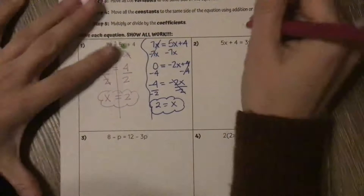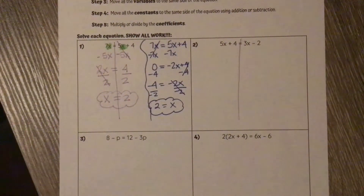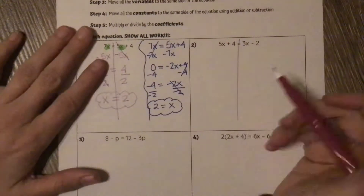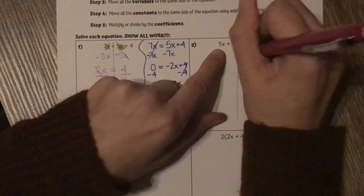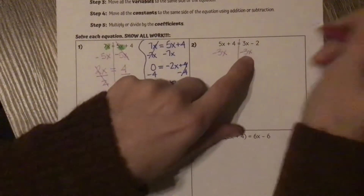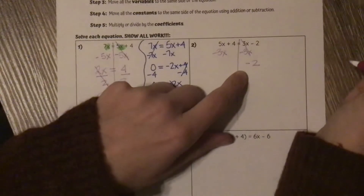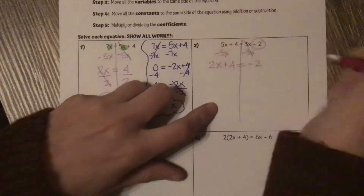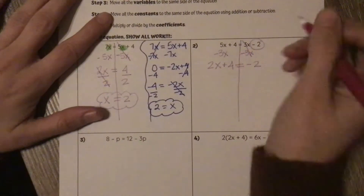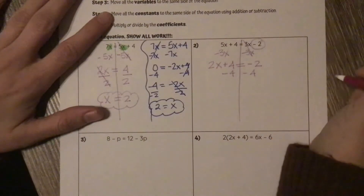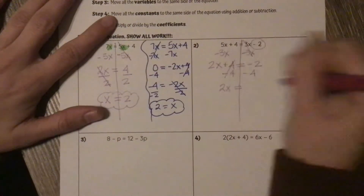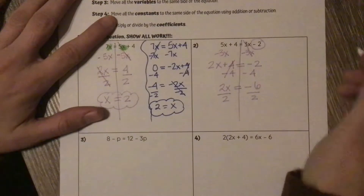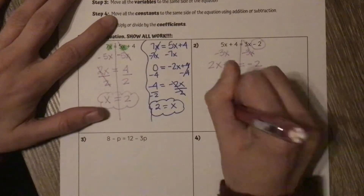Let's look at number 2. Draw my line down the equation sign. Looking for parentheses — there aren't any. Nothing to simplify on the left, nothing to simplify on the right. So I'm going to combine my variables. If I move my 3x to the left it's going to stay positive, so I'm going to subtract 3x from both sides. The x's cancel on this side, leaving negative 2. On the other side, 5x minus 3x is 2x plus 4. Subtract 4 from both sides — those cancel, leaving 2x equals negative 6. Divide both sides by 2 and we get x equals negative 3.